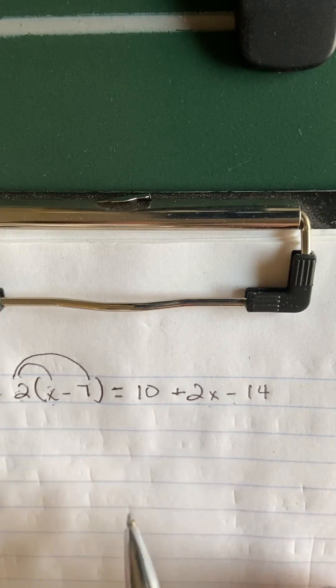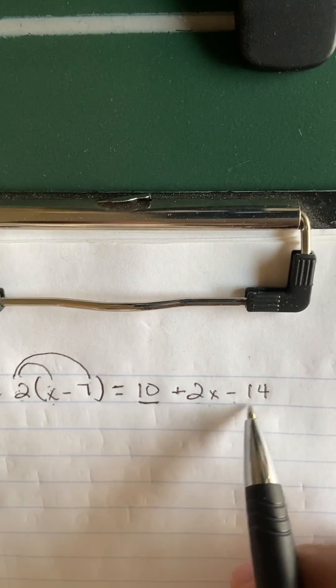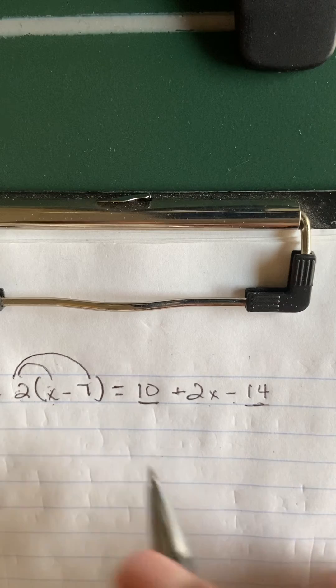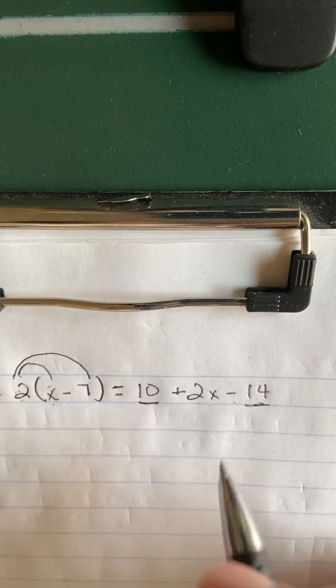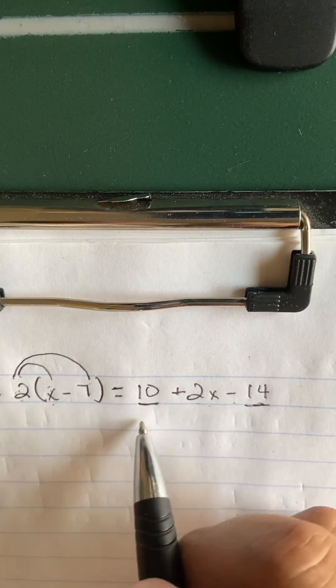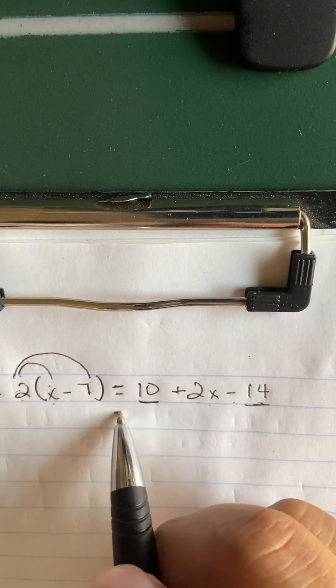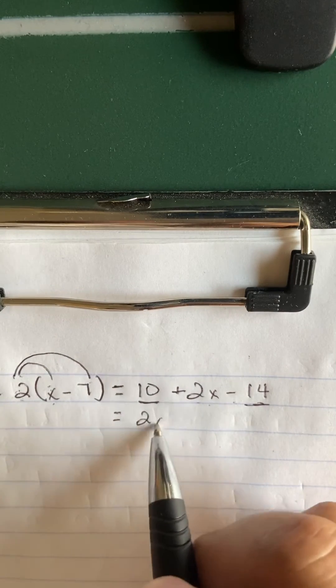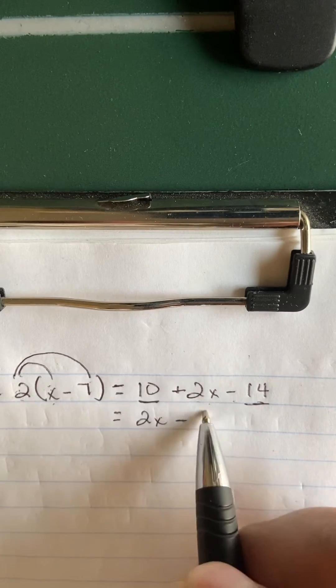...this, the parentheses are gone. Now you want to look for like terms. So the like terms here is 10 and negative 14. 10 and negative 14, that's going to be 10 minus 14, which is negative 4. I'm going to write the x term first, so that's going to be 2x minus...